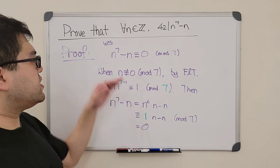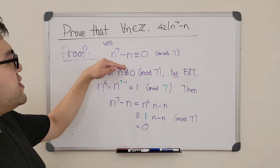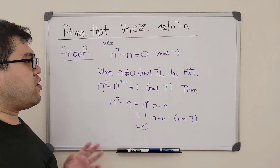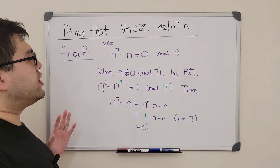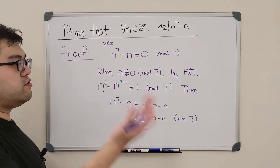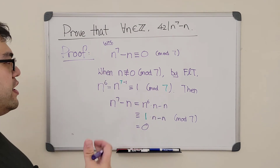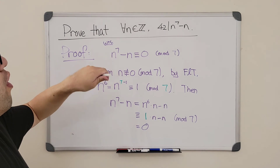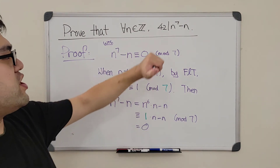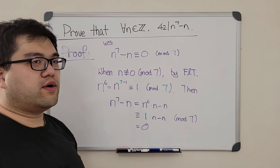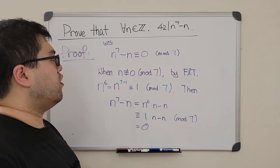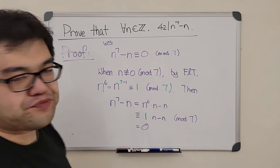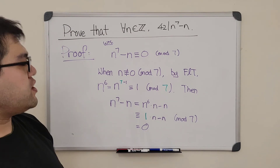We have now proved that n to the seventh power minus n is a multiple of 2, 3, and 7. Putting all the factors together, we've proved that for all integers n, the expression n to the seventh power minus n is always a multiple of 2 × 3 × 7 = 42. That's it — hope you guys enjoyed this video.